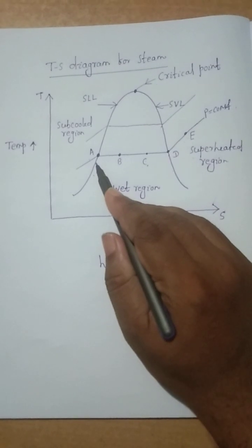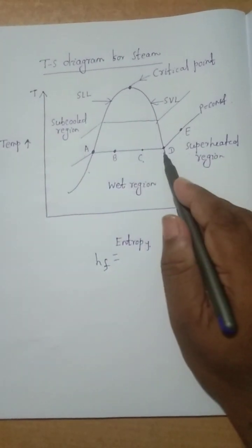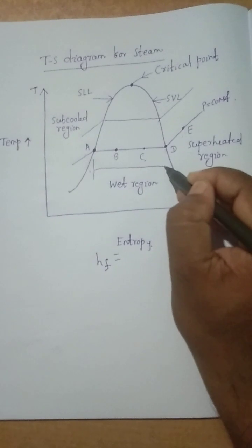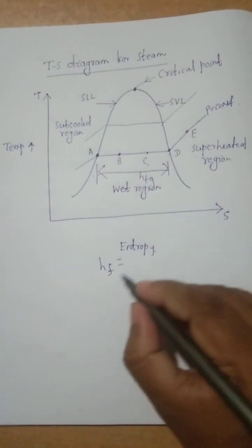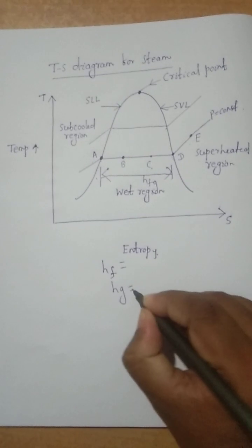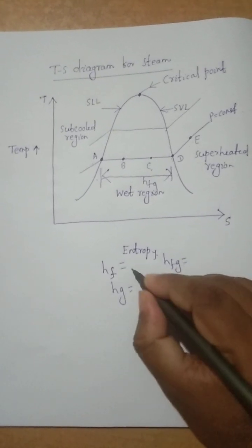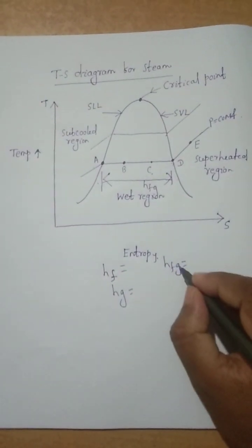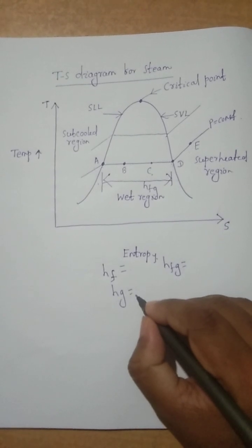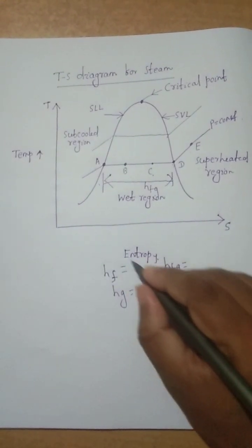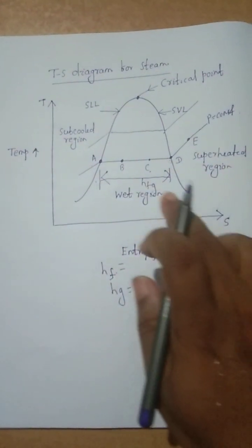The amount of heat added to convert saturated water to saturated vapor — that is, from point A to point D — is called the enthalpy of evaporation or vaporization, denoted hfg. At point D, the enthalpy is called hg. So we have three enthalpy values: hf is enthalpy of liquid, hfg is enthalpy of evaporation, and hg is enthalpy of dry saturated steam. Adding hfg to hf gives hg. This is an overall summary of the T-S diagram of steam.